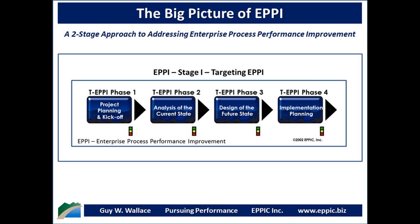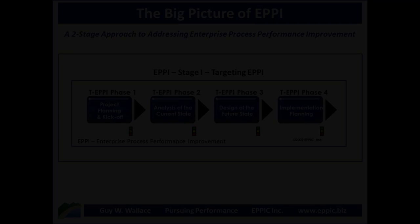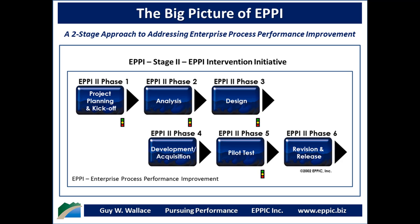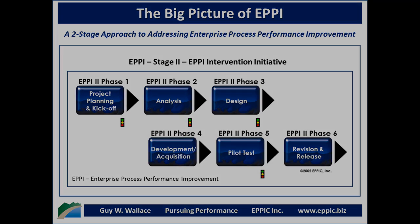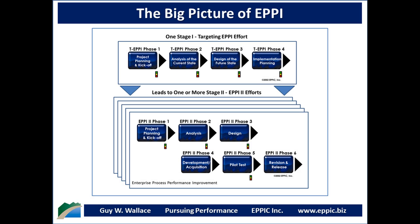Stage 1 starts off with project planning and kickoff, an analysis of the current state, a design of the future state, and an implementation which determines which gaps to address using something akin to Pareto analysis methods. Stage 2 is where the EPI intervention initiatives are undertaken — one or more of these might be necessary in order to achieve the process performance improvement. Stage 1 often leads to more than one Stage 2 effort.